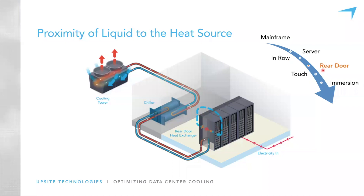The next step is rear door heat exchangers, where liquid is now on the back of each cabinet. A rear door heat exchanger is mounted on the back of each cabinet and is often referred to as a liquid-cooled solution. However, it is not truly liquid cooling because liquid is not removing the heat from the source — air is still removing the heat from the source and only carrying it a couple of inches before passing the heat to the liquid flowing through the radiators in the rear door.